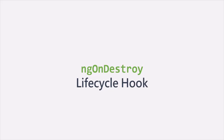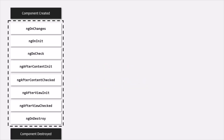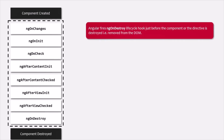Finally, in this lecture, we are going to talk about the last lifecycle hook of Angular called ng-on-destroy. This ng-on-destroy is the last lifecycle hook of an Angular component or a directive. Angular fires the ng-on-destroy hook just before the component gets destroyed, that means just before the component is removed from the DOM.